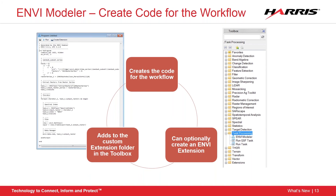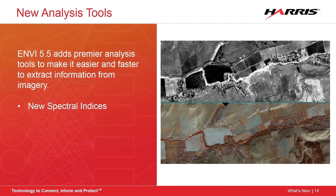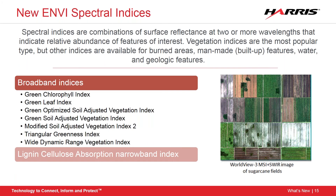In addition to the ENVI Modeler, some new spectral indices have been added to ENVI. Like all spectral indices in ENVI, these are vetted by our science team before being added to the product — important because hundreds of band math expressions exist and we include the ones we feel are most valuable. Spectral indices are typically simple math expressions that extract information from imagery using two or more bands, with common applications in agriculture, vegetation monitoring, and more. NDVI, for example, is a very popular spectral index.